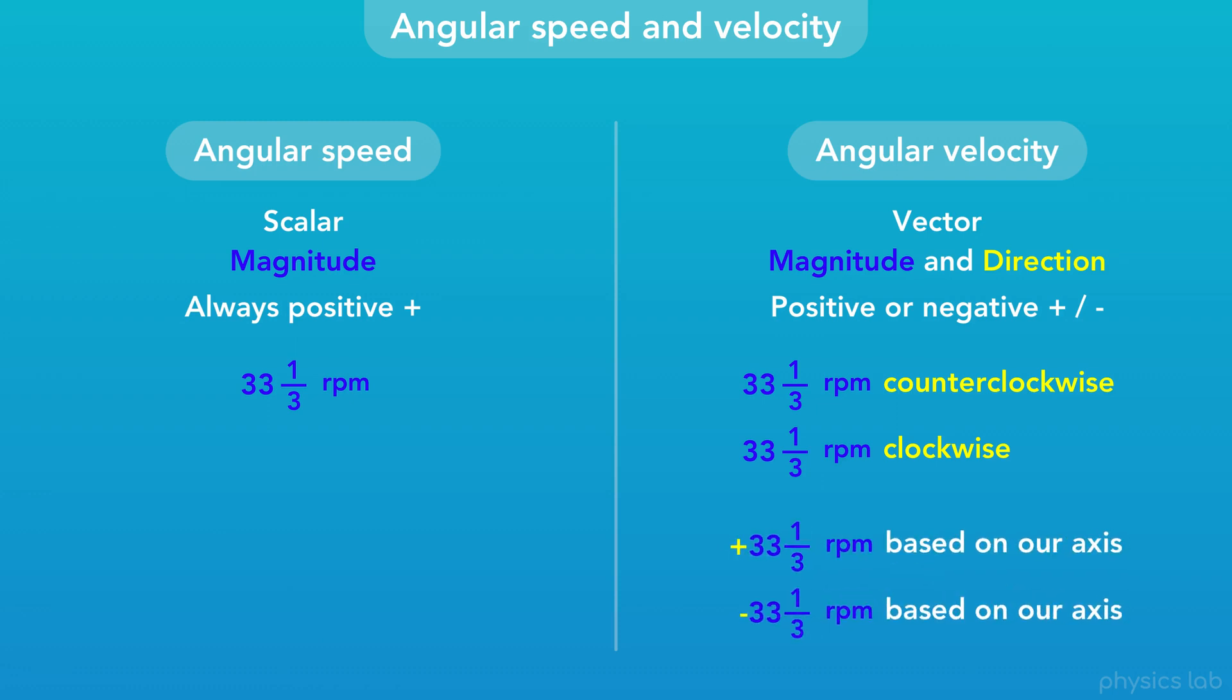Or instead, it could be positive or negative 33 and a third RPM based on our axis, where the positive and negative tell us the direction.